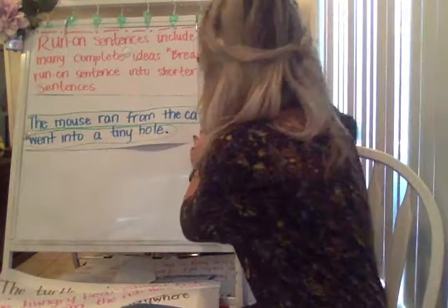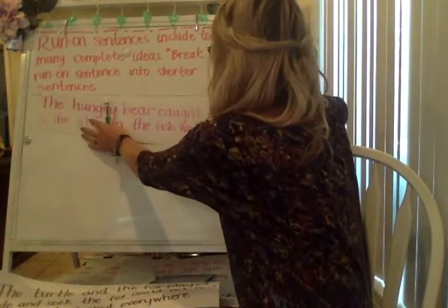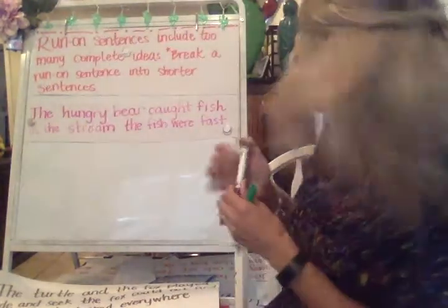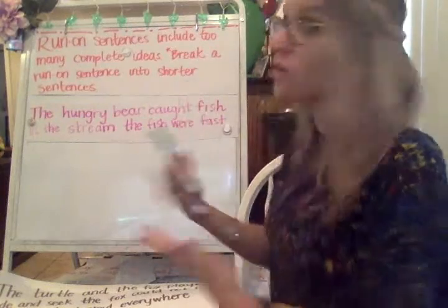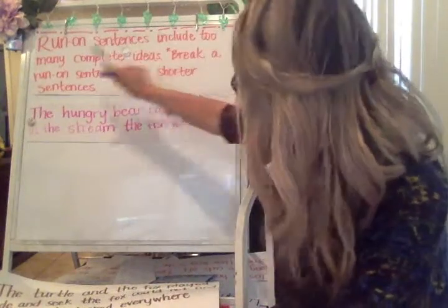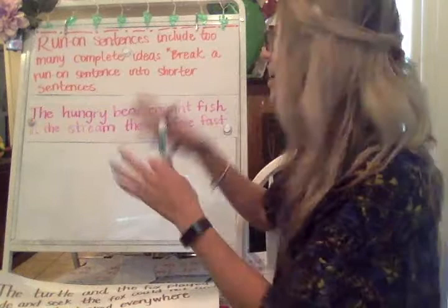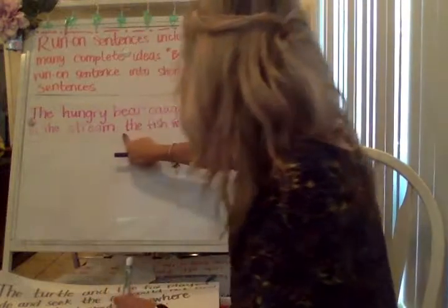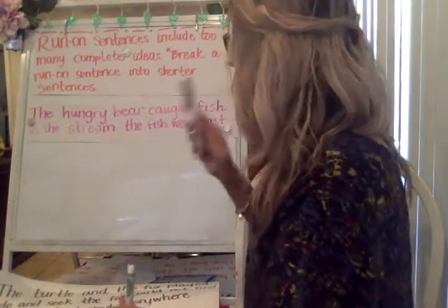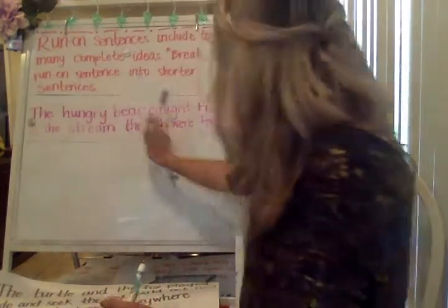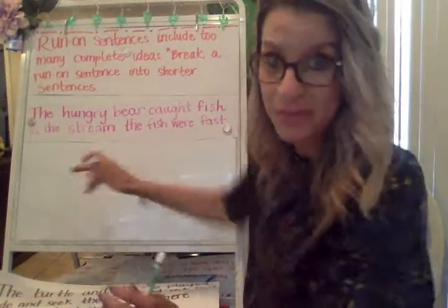Here's another one: 'The hungry bear caught fish in the stream. The fish were fast.' Notice how you're trying to jam all of that information — too much information, too many complete ideas. We've got to break it into shorter sentences. 'The hungry bear caught fish in the stream' — that tells what the hungry bear did, that it caught fish that were in the stream. That's the action part.